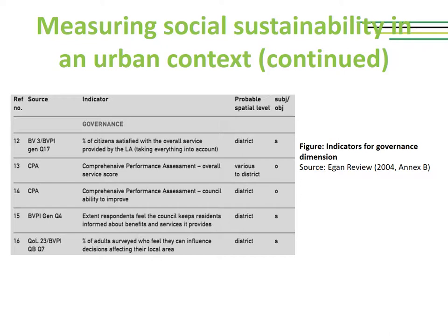The next dimension is the governance dimension, which is also very much linked to social sustainability. Please examine the indicators used under governance and observe again how many are based on perception versus hard objective data. You have to be aware that a lot of the issues pertaining to social sustainability will be measured based on perception. This doesn't make social sustainability or governance less relevant — it just makes it a little bit more difficult to measure.